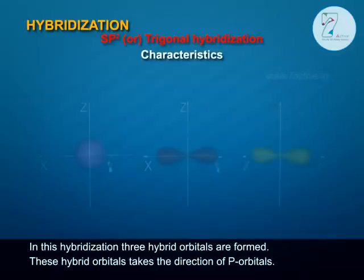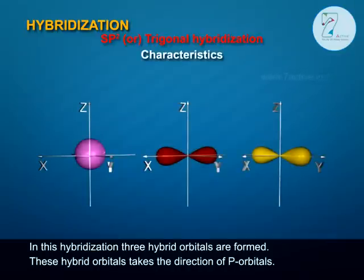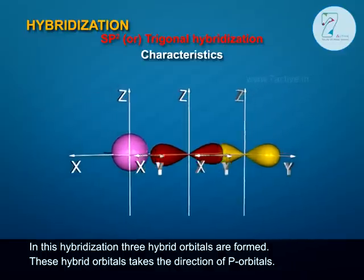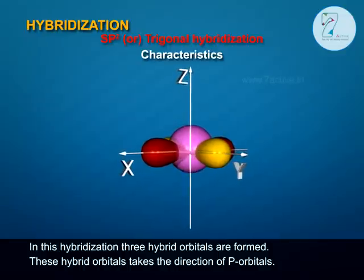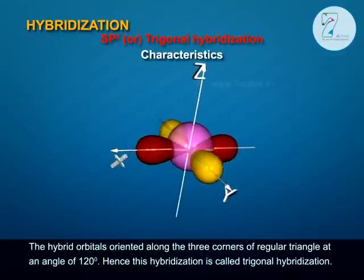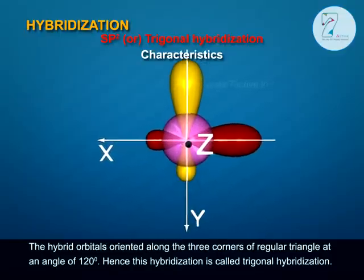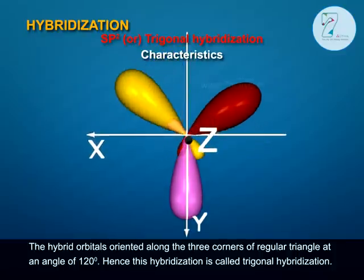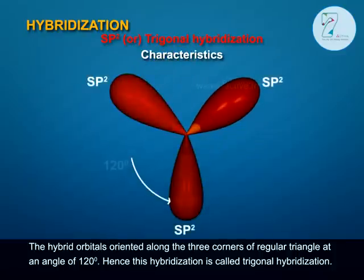Characteristics of Trigonal Hybridization: In this hybridization, three hybrid orbitals are formed. These hybrid orbitals take the direction of p orbitals. Each SP2 hybrid orbital possesses 33.3% s character and 66.7% p character. The hybrid orbitals are oriented along the three corners of a regular triangle at an angle of 120 degrees.